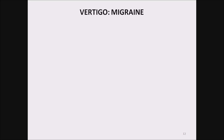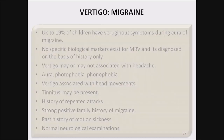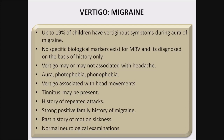Now, migraine — the most common condition seen in children as well as adults. Up to 19% of children have vertiginous symptoms during the aura of migraine. No specific biological marker exists for migraine-related vertigo; it is diagnosed only on the basis of history. Vertigo may or may not be associated with headache. Aura, photophobia, and phonophobia are present. Vertigo is usually associated with head movements. Tinnitus may be present because of inner ear vessel spasm, and there is a history of repeated attacks with strong positive family history of migraine.